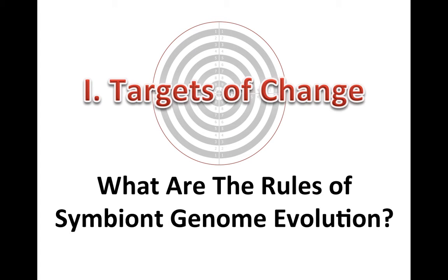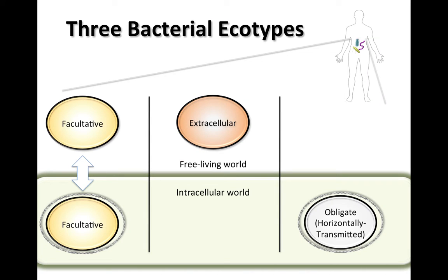I'm going to start with the first topic: targets of change — what are the rules of symbiotic genome evolution? I want to start with a framework for how I view the bacterial world. I think of the bacterial world in terms of three types essentially. You can have facultative intracellular bacteria that replicate inside cells of a host, but those bacteria maintain the ability to also replicate outside a host cell in a free-living environment. They don't need a host, but they can use one.